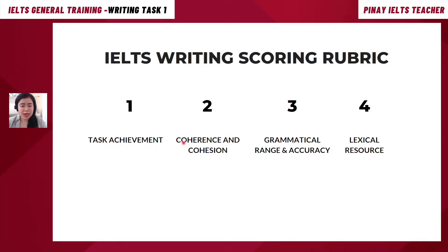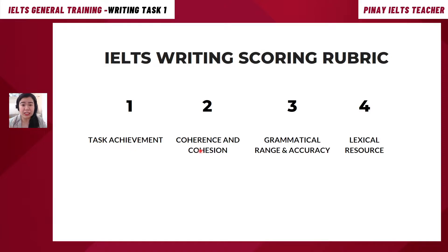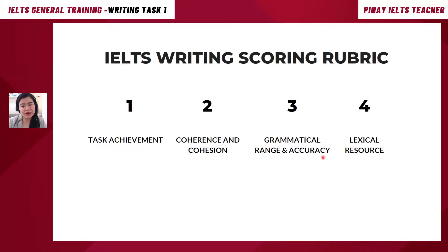Next is Coherence and Cohesion. From the word 'coherence,' this is about how well you've put your writing together in a manner that is organized, fully structured, and connected. Were your ideas flowing in a smooth manner? Did you have enough linking or connecting words that would connect one idea to another? That's all about Coherence and Cohesion.